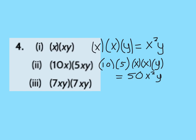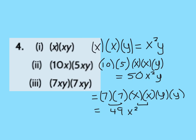And the last question then, we have 7 by 7, we have x by x, we also have y by y. So 7 by 7 gives me 49, x by x gives me x squared, and y by y gives me y squared.